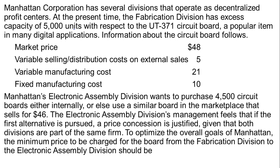Information about the circuit board: the market price is $48, variable selling and distribution costs on external sales is $5 — and the key is that that's on external sales — variable manufacturing cost is $21, and fixed manufacturing cost is $10.